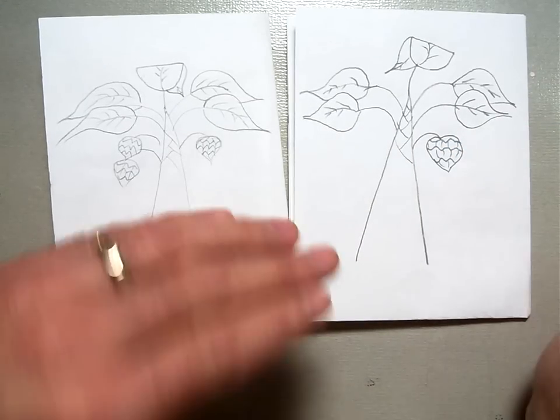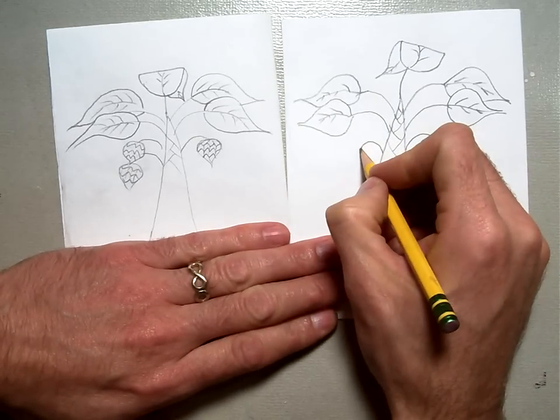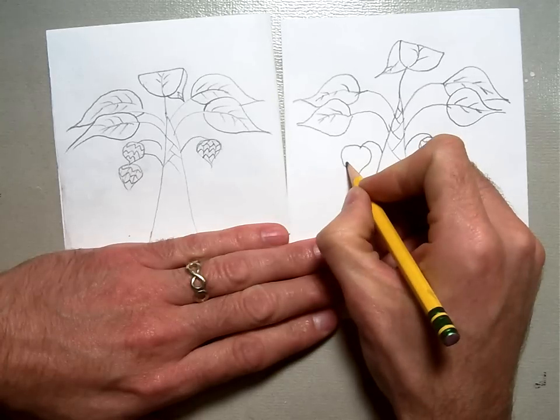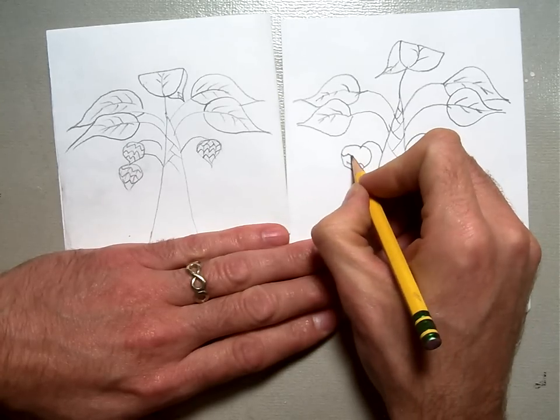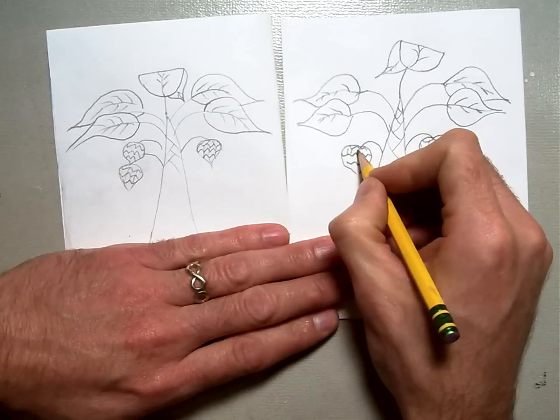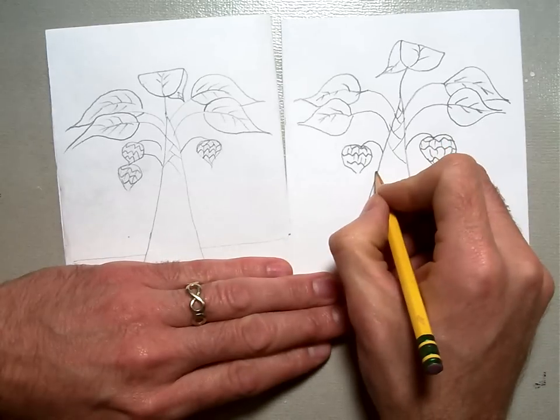I'm going to put one on one side and two on the other side so that we have more organic looking, like natural balance, rather than having something perfectly symmetrical. Because nature is very rarely perfectly symmetrical, right? So there's my one banana bunch.